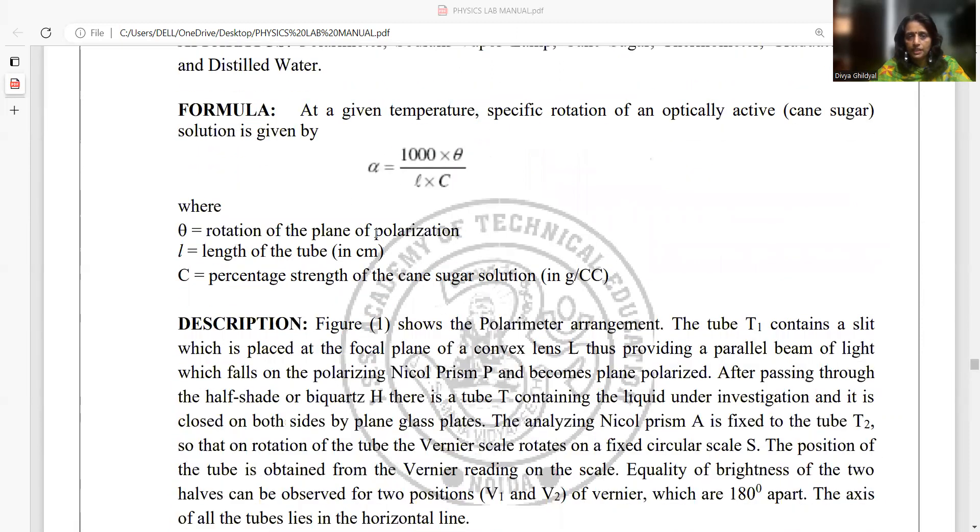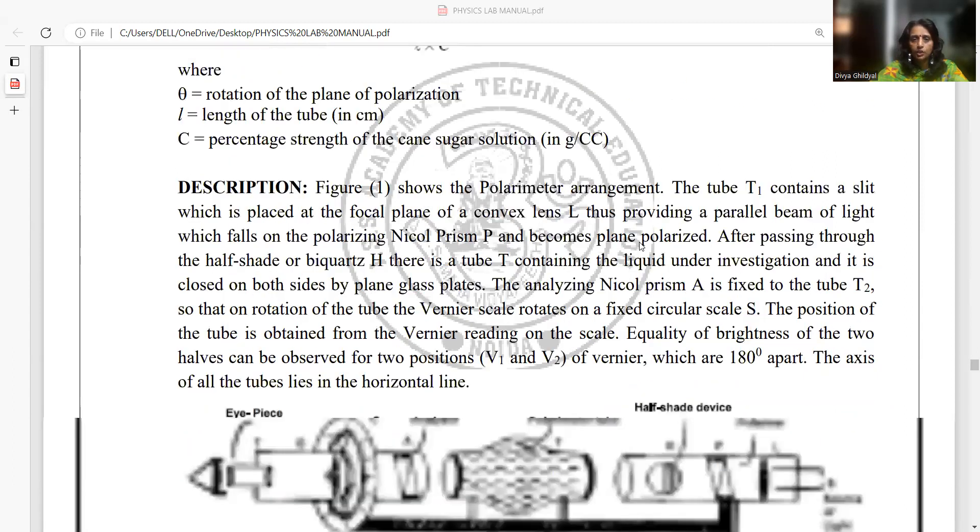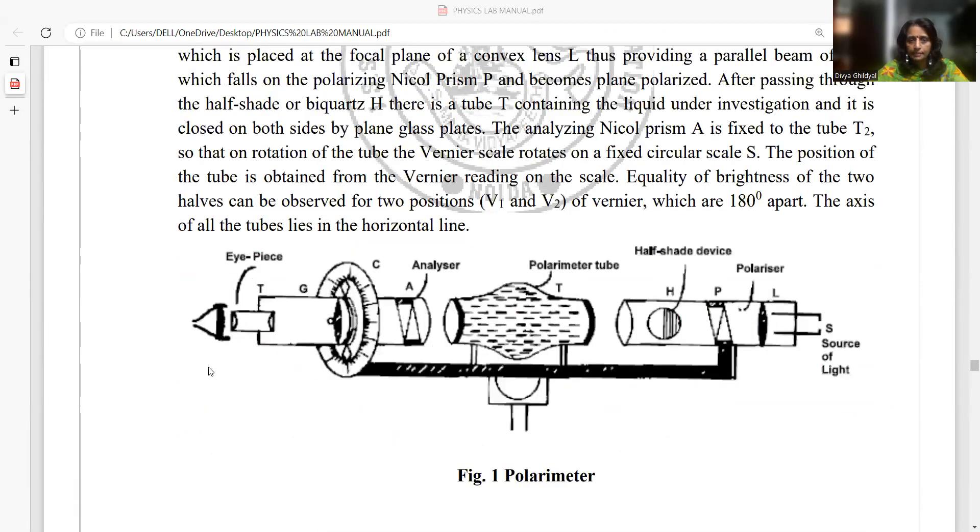The formula used will be specific rotation = 1000 × θ / LC, where θ is angle of rotation of the plane of polarization, L is my length of tube in centimeter, which is usually 20 centimeters, and C is percentage strength of the cane sugar solution in grams per cubic centimeter.